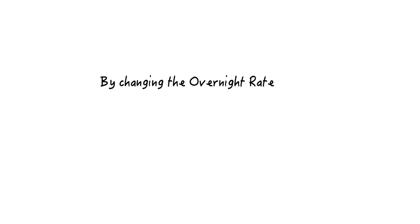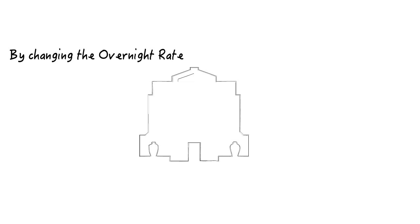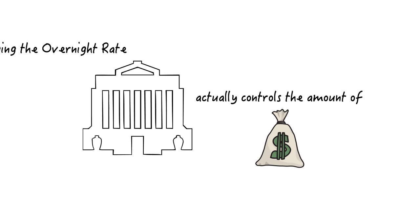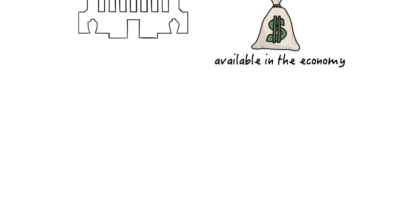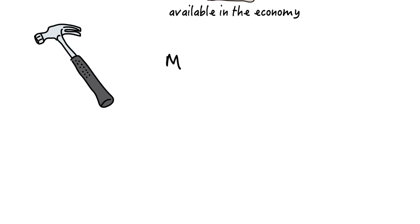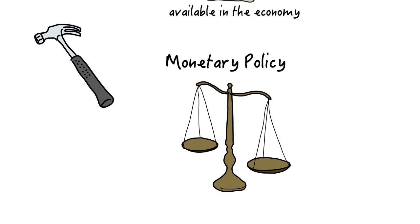By changing the overnight rate, the Bank of Canada actually controls the amount of money available in the economy. This is the main tool that the bank uses for its monetary policy.